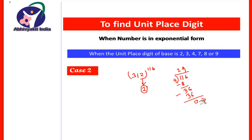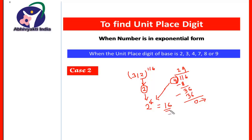When the remainder is 0, instead of using that remainder as the index, we take 4 as the index. So base is 2, and we write 2 to the power 4. That gives 2, 4, 8, 16. Therefore 16 is the result, and since 6 is the unit place digit, the unit place digit of this result will also be 6.